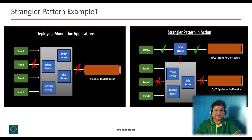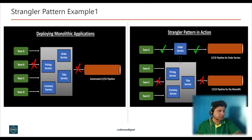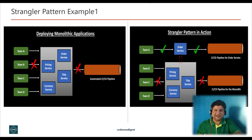In this diagram, the order service is eventually strangled from the monolithic into an independently deployable service with its own CI/CD pipeline. On the right-hand side, Team A is now not dependent upon any issues with other teams. Likewise, we can create more services similar to pricing, title, and currency service, and then strangle the whole legacy monolithic application. This happens in a phased manner — we transform each functionality into a new service, the new service and monolithic coexist for some time, and then the new service replaces the existing functionality.